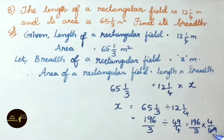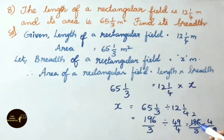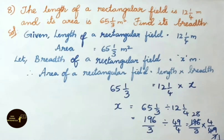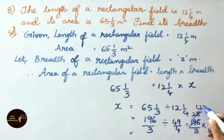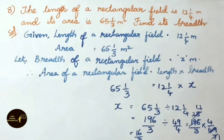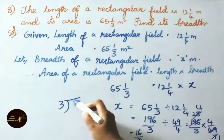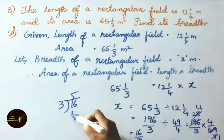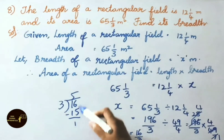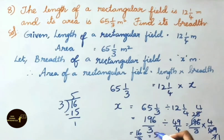Using 7 times table: 7 sevens are 49, 7 fours are 28, giving 4 into 4 equals 16 by 3. Simplifying 16/3 by division: the answer is 5 1/3 meters. Therefore breadth of the rectangular field is 5 1/3 meters.